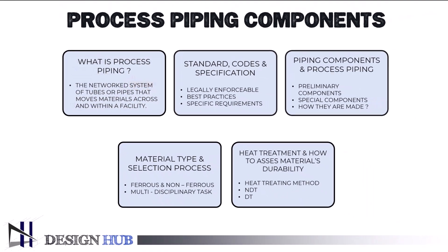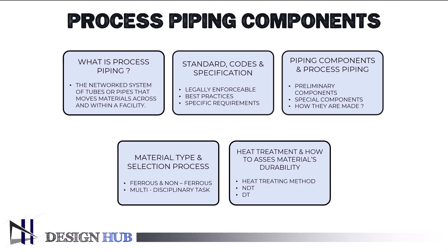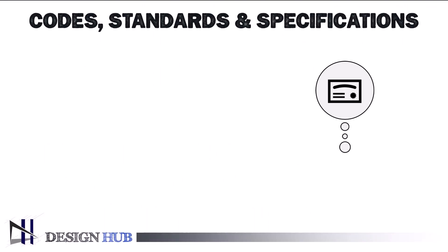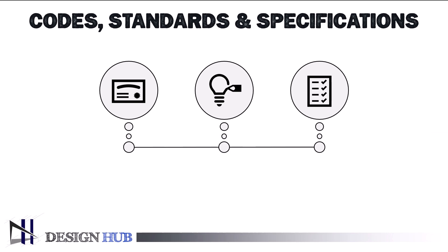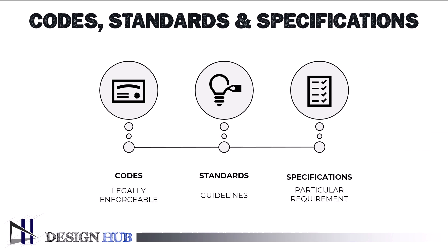Now we will learn about the foundation of engineering, which are codes and standards, because they offer the norms, rules, and best practices necessary to guarantee the dependability, safety, and quality of goods and services. They can also assist in lowering the likelihood of mishaps and injuries. Codes, standards, and specifications are used in a variety of fields to ensure uniformity, quality, safety, and performance.